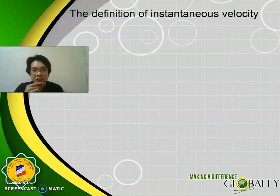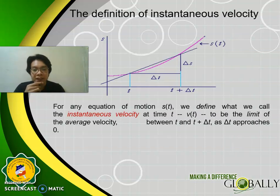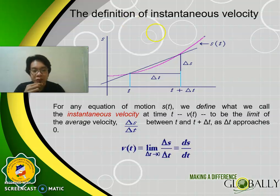Let's proceed with the definition of instantaneous velocity. For any equation of motion S(T), we define what we call the instantaneous velocity at time T to be the limit of the average velocity between T and T plus delta T, as delta T approaches 0. As you can see, this is now equal to the derivative of S with respect to T.